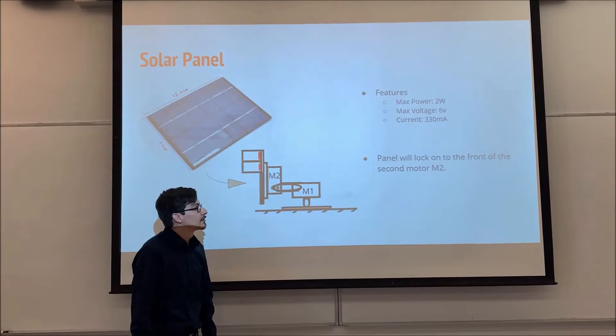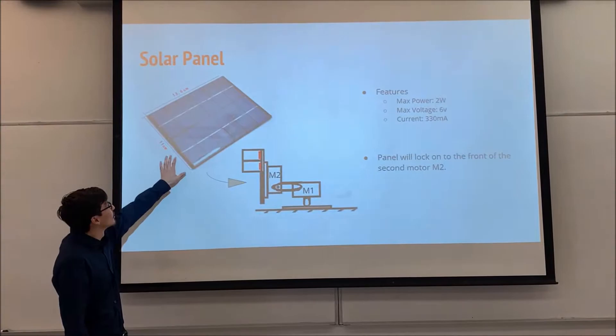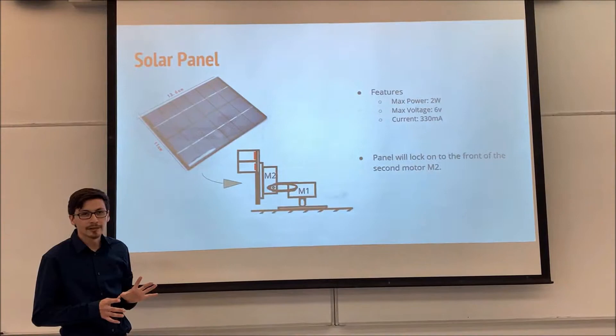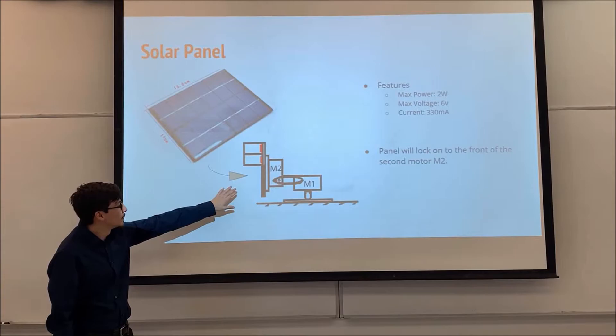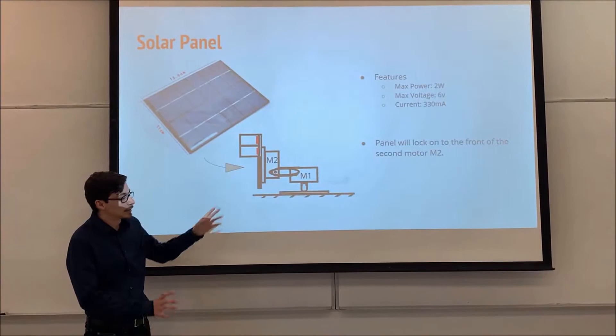So now we're going to talk about our solar panel. The features is that the max power is 2 watts. The max volts should be around 6 volts. The current is on 338 milliamps. And this solar panel that we're using, it's a pretty lightweight solar panel. It's pretty small. It's around 4 by 5 inches. And this solar panel is going to be placed near our second motor, as we saw earlier.